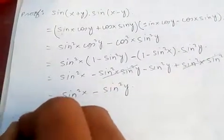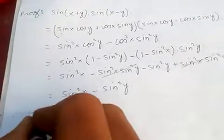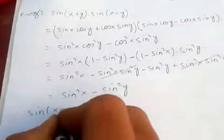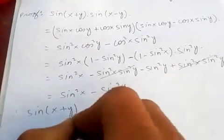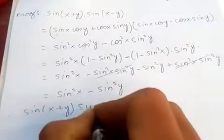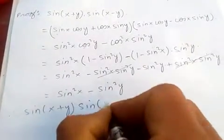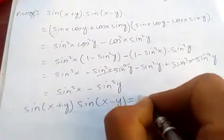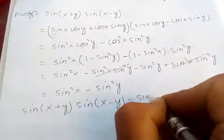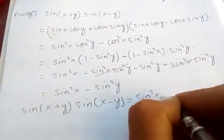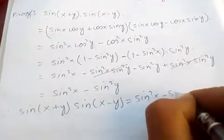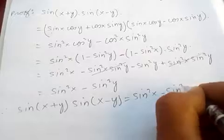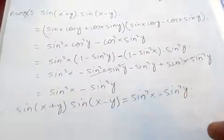So lastly we get sin squared x minus sin squared y. Therefore, sin of x plus y times sin of x minus y is the same as sin squared x minus sin squared y.